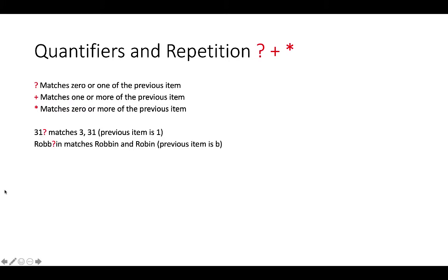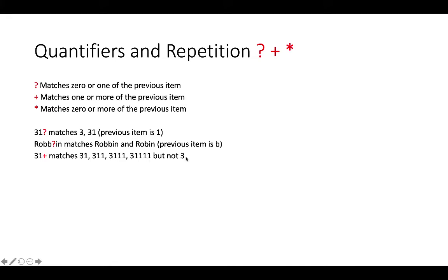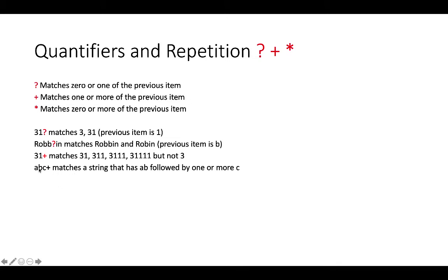So 'robb?in' matches 'robin' and 'robbin' with one 'b' only, because the previous item is 'b' just to the left of the question mark. '31+' matches '31', '311', '3111', and so on, but not '3', because the plus sign matches at least one of the previous item — it cannot be zero.